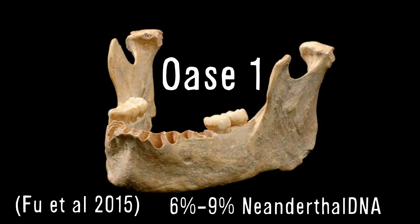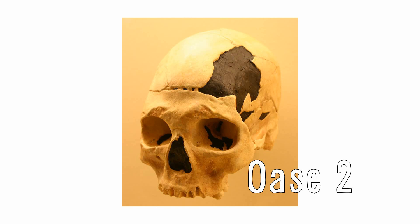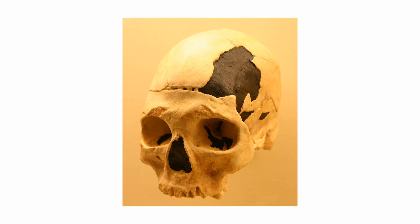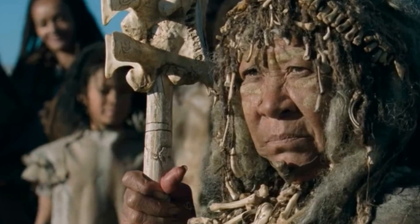A Bronze Age Homo sapien mummy named Ötzi is said to have possessed a higher degree of Neanderthal ancestry than modern humans. And another much older human who lived 37,800 years ago had a recent Neanderthal ancestor four to six generations prior - meaning this individual had a great-great-great-great-grandmother or grandfather who was a Neanderthal. To put that in perspective, going back four to six generations puts my own ancestors still living during the Civil War. Even after the extinction of Neanderthals, a part of them lived on within some of us.